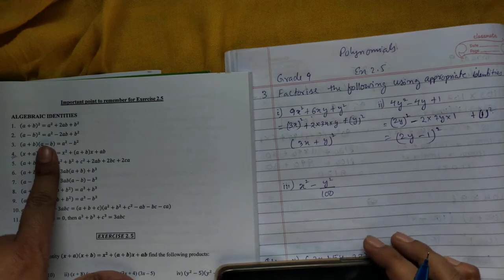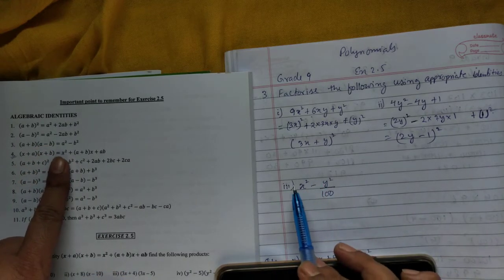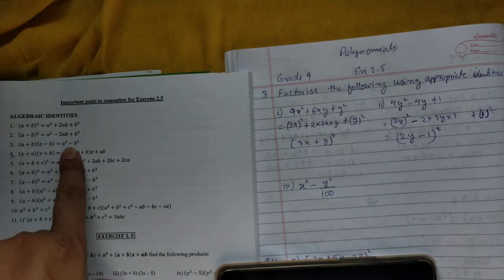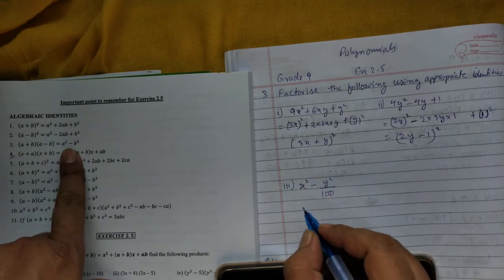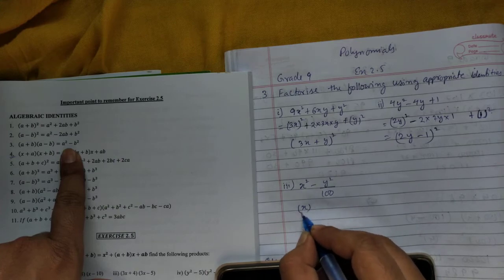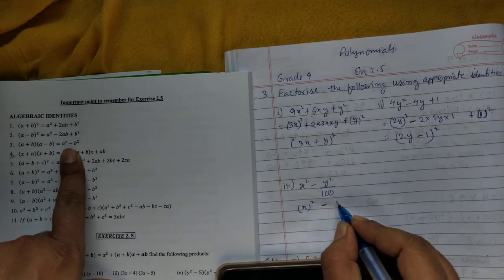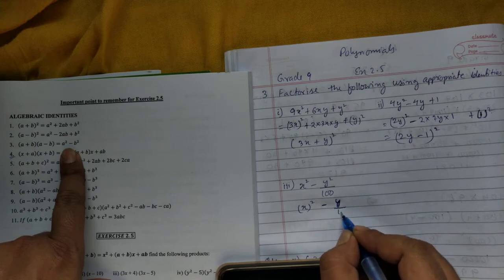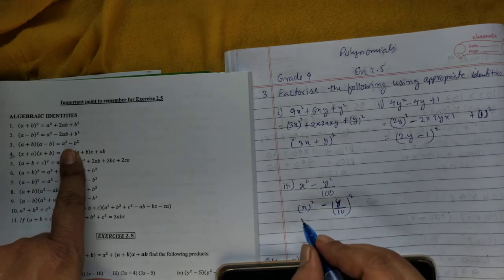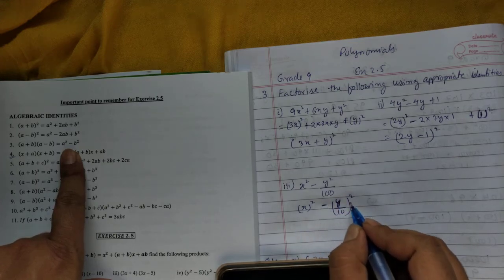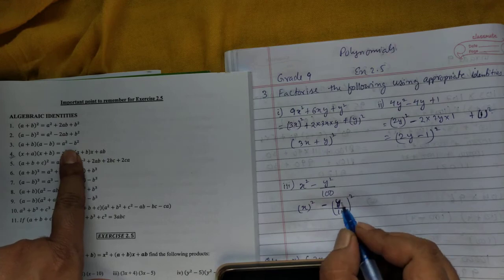the formula A² - B². First make perfect squares: this is x², and y²/100 can be written as (y/10)². This is in the form A² - B². What formula do we use? We use (A + B)(A - B).